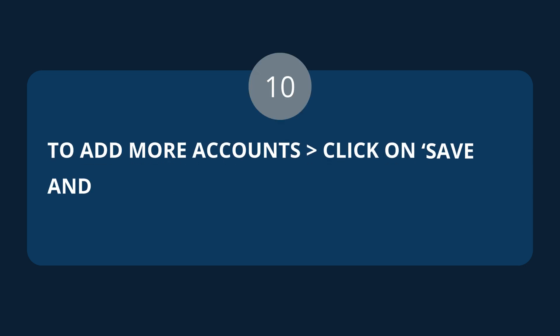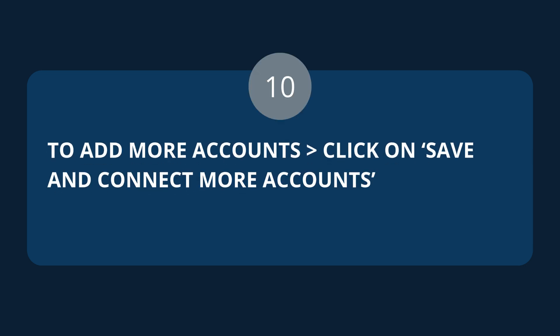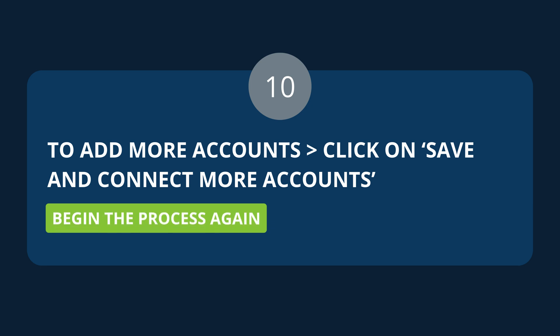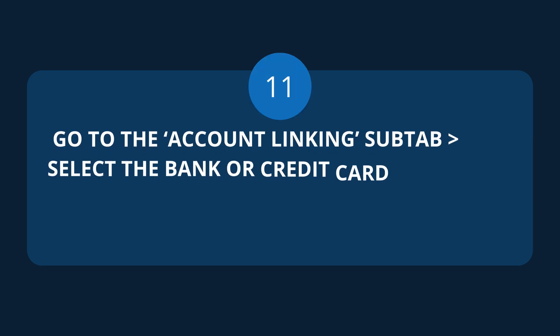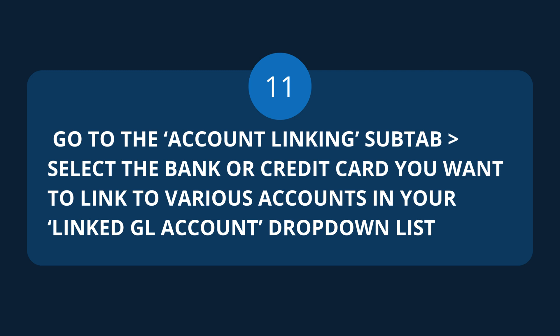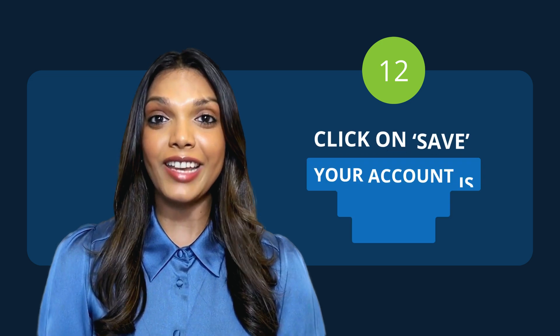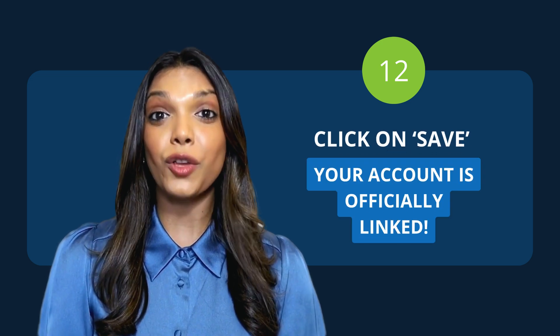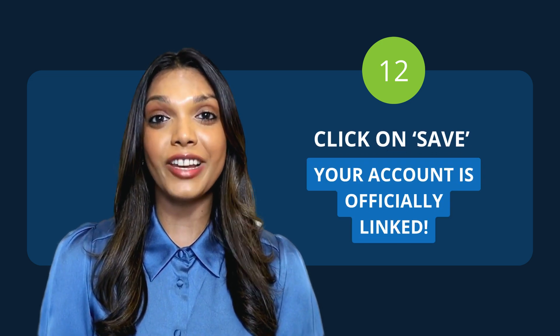Review all of the information you have entered to check that it is correct before clicking on Save and Finish. To add more accounts, click on Save and Connect More Accounts and begin the process again. Then go to the Account Linking sub-tab. Select the bank or credit card you want to link to various accounts in your Linked GL Accounts drop-down list. And finally, click on Save. Your account is officially linked.